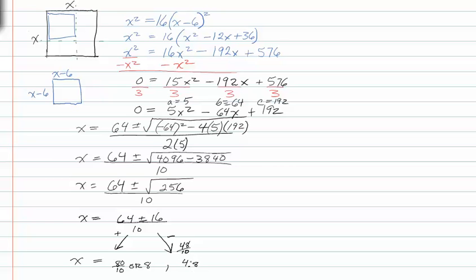If the original square was four point eight units of measure, you could not decrease this by six, so this solution does not work. Therefore, the sides of the original square are eight inches.